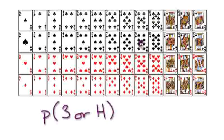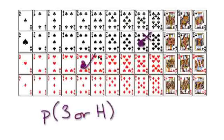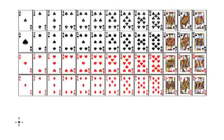This card would be a bad outcome because it's neither a three nor a heart. Whereas this one, even though it's not a three, it is a heart, so this would be a good outcome. Remember, I'm only picking one card. Press pause and think about it.